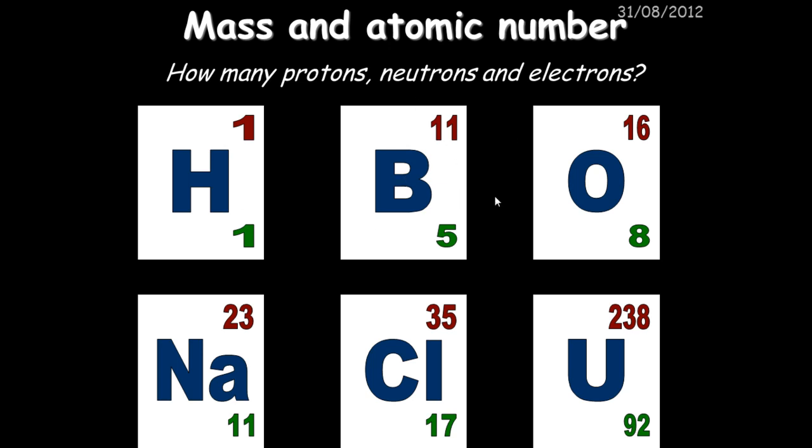With boron, which is B, the symbol for this, the number of protons is five. The number of electrons is also five and because our mass number is eleven, we can tell that the number of neutrons is six because five plus six gives us our eleven.